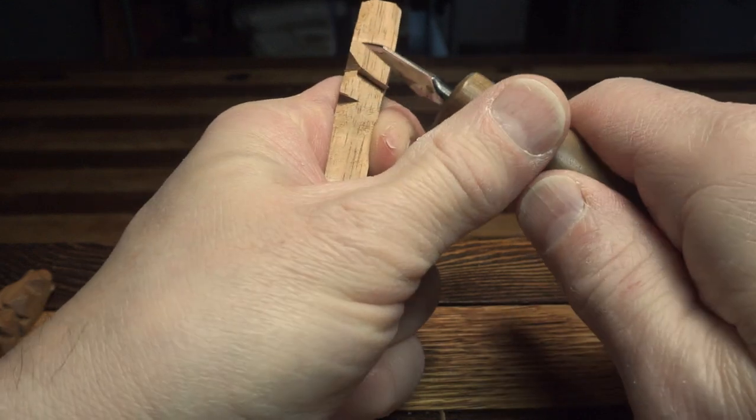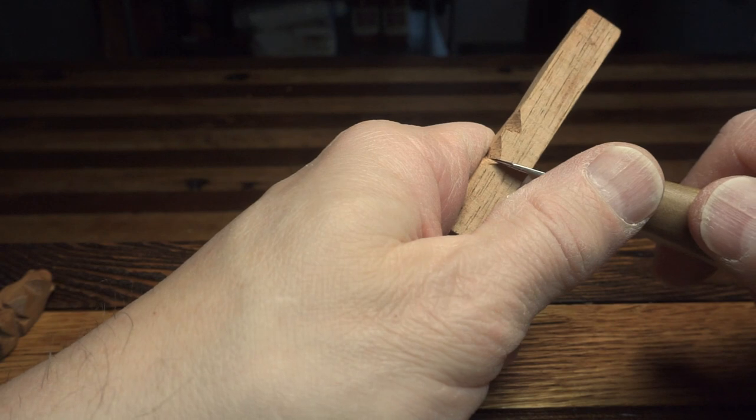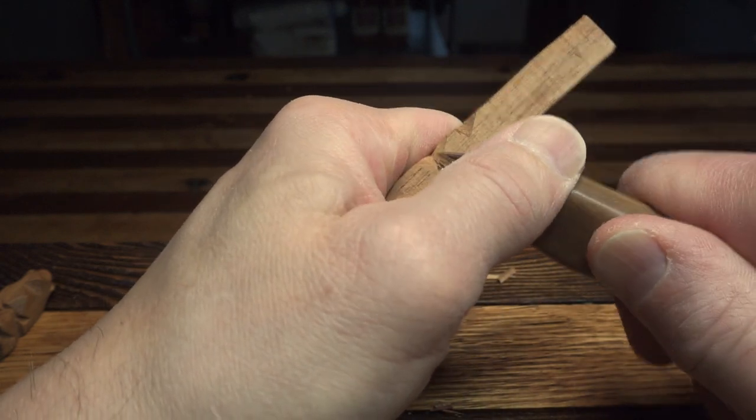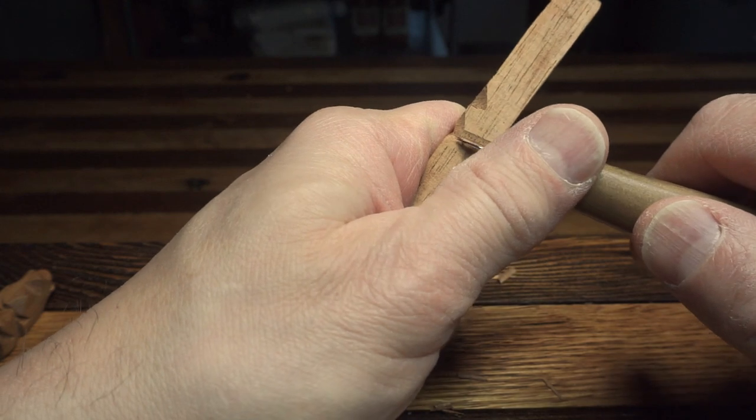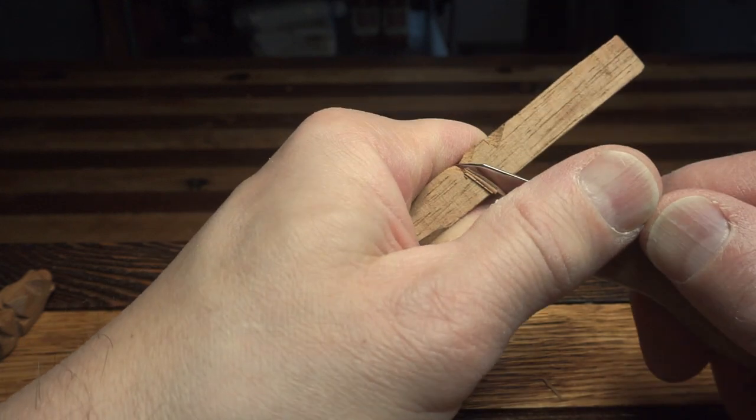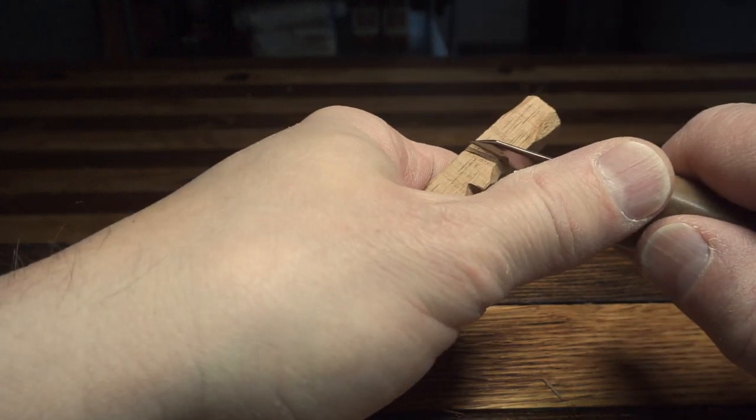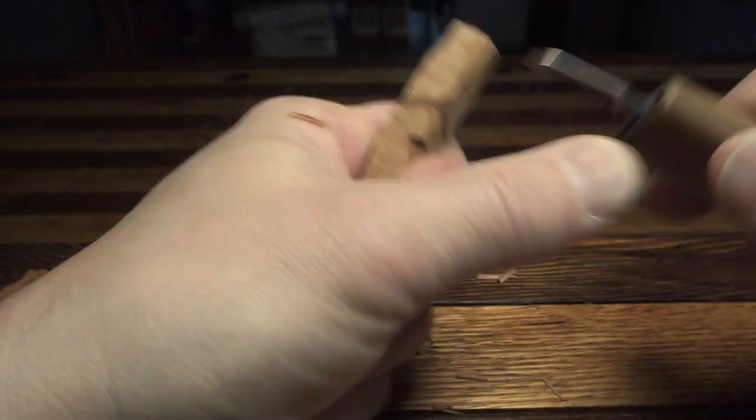Extending the line downward on the side here which I will eventually make into an eye area when all is said and done. Like I said there really isn't a pattern you have to go by on these. You can pretty much carve them any way you want.